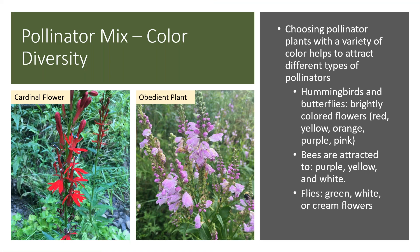Choosing pollinator plants with a variety of colors helps attract different types of pollinators. Hummingbirds and butterflies love brightly colored plants — red, yellow, orange, purple, and pink flowers really draw them in, so things like cardinal flower are excellent to include. Bees are attracted to purple, yellow, and white, so obedient plant is an excellent choice — you can see an eastern bumblebee pollinating obedient plant right here. Flies like green, white, or cream flowers.